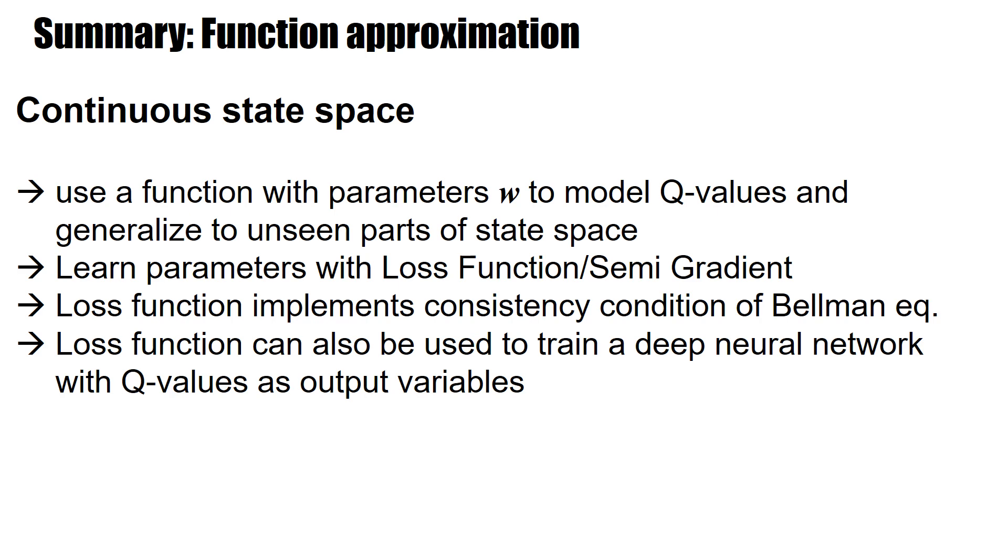So let's summarize. Function approximation means that we use a function with parameters W to model Q values. And that allows us to generalize to unseen parts of the state space. And then we saw that we can learn parameters W with a loss function. The loss function implements the consistency condition of the Bellman equation. And if we do a gradient descent, in fact, it turns out it's better to do semi-gradient. We keep one part of the Q values fixed so that it can serve as a target. And this idea of loss function and semi-gradient can also be used to train deep neural networks with Q values as output variables.